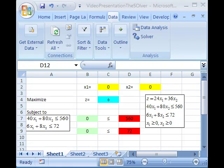I've given you the equations over here on the right-hand side. The maximization equation is 24x1 plus 36x2. The constraint is that 40x1 plus 80x2 must be less than 560, and the second constraint is that 6x1 plus 8x2 must be less than 72.